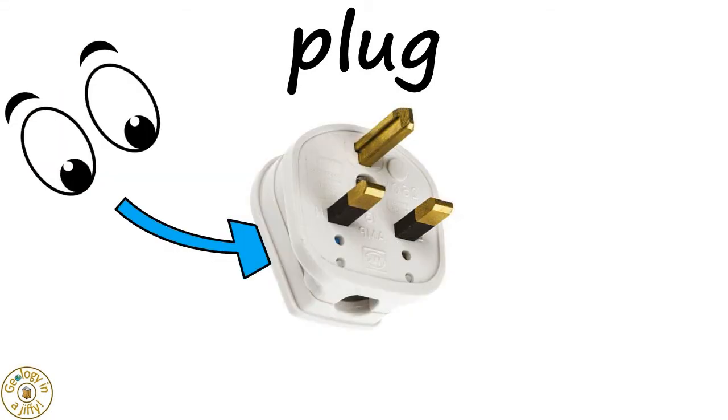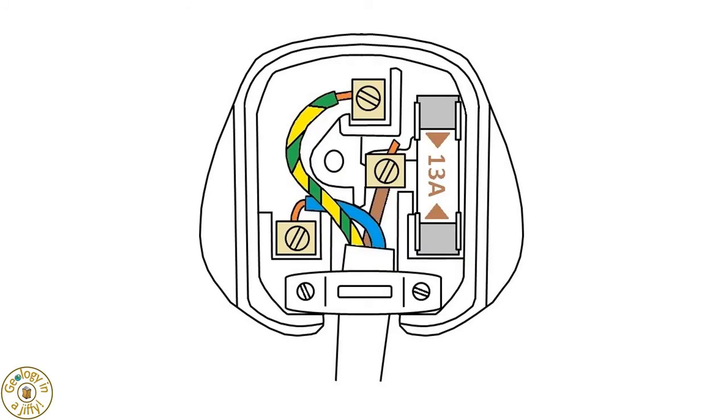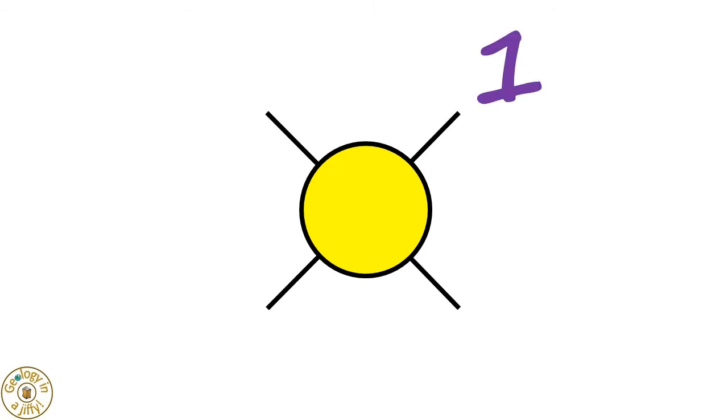If we look at the back of a plug and then take off the back of the plug, we see a variety of objects. A plug has four main parts to it.